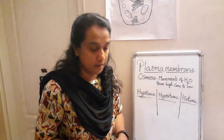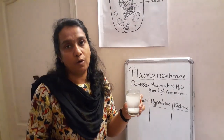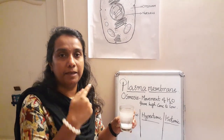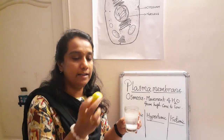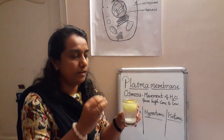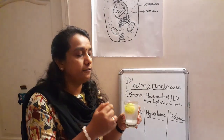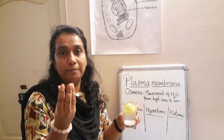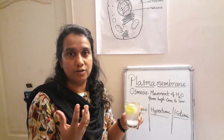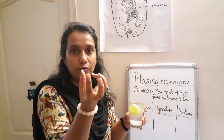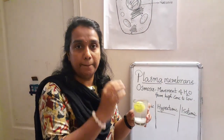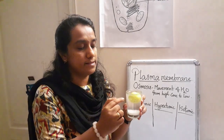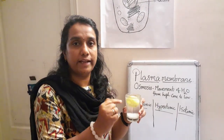Next we will see what is hypertonic. I took one glass of salt water, so the water became more concentrated when I added the salt. Now I am adding a lemon into that. After one or two days, the water from inside the lemon will come outside. Like when we put mango in salt water for making pickle, after one or two weeks or a month, the mango will become shrunken — because the concentration of salt is more inside this water.